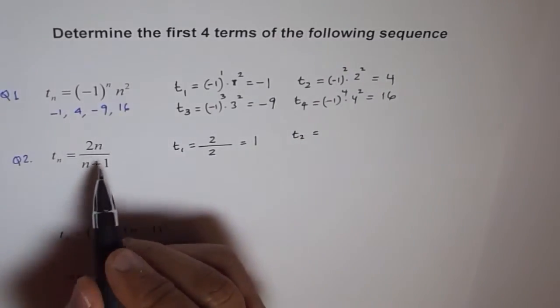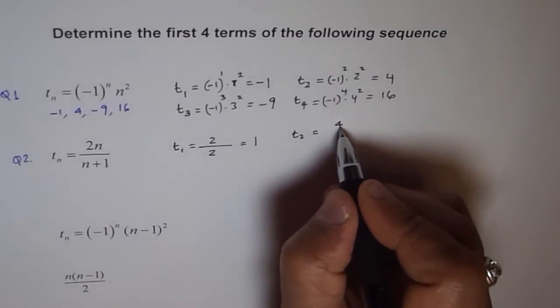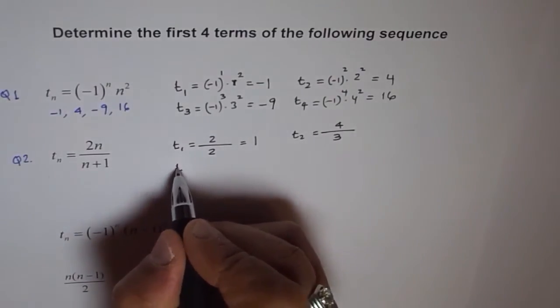And then t2 equals to, when I write n as 2, I get 2 times 2 as 4. I get 4 over 2 plus 1, 3. So, we get 2 plus 1, 3. How about t3?